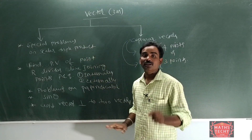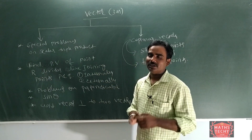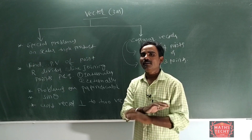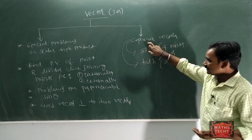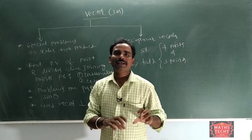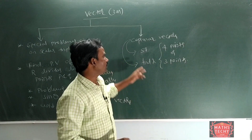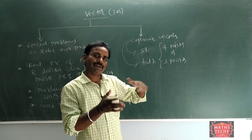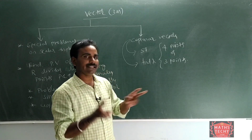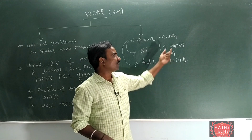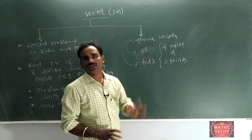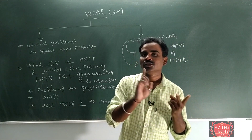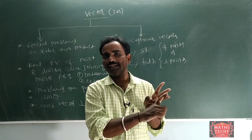We are on the basic model. The key concepts are dot product, cross product, and scalar triple product — three concepts. For the special problems, we have to find the scope. The given vectors are coplanar — find lambda. The problem involves 3 points and 4 points to solve. The basic operations remain dot product, cross product, and scalar triple product.